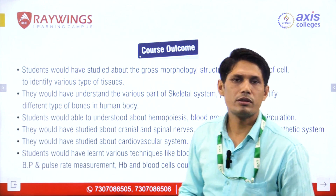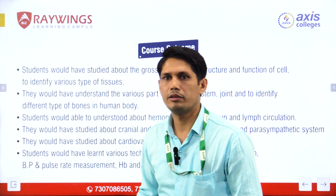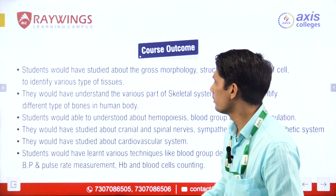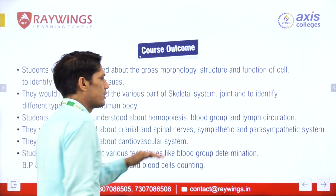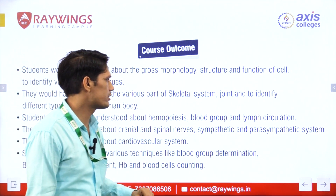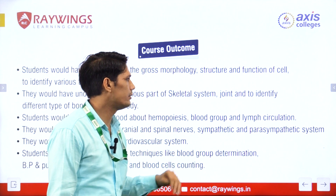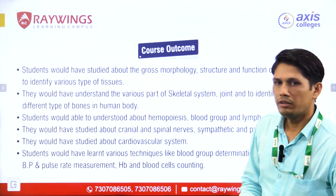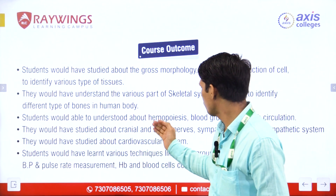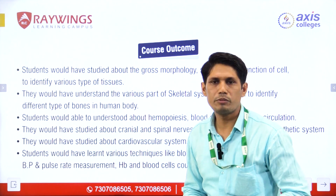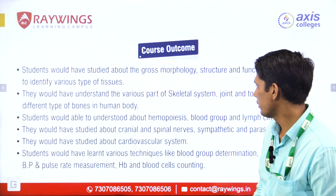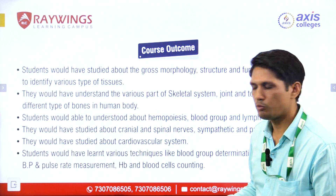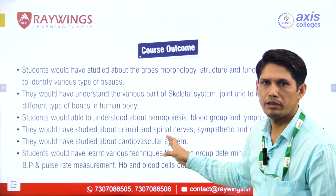Course outcomes: students will gain knowledge of the morphology and function of various types of tissues, and an understanding of the skeletal system — divided into the axial and appendicular skeleton systems — joints and types of bones. Also included are hemopoiesis, blood clotting mechanisms, the cardiovascular system, and the different types of techniques used in human anatomy and physiology labs.